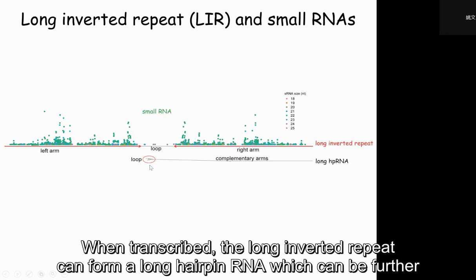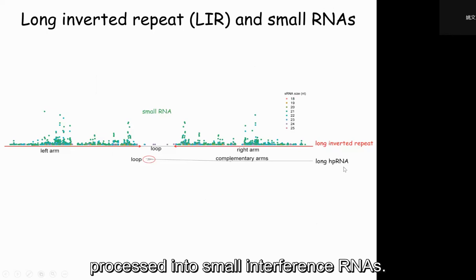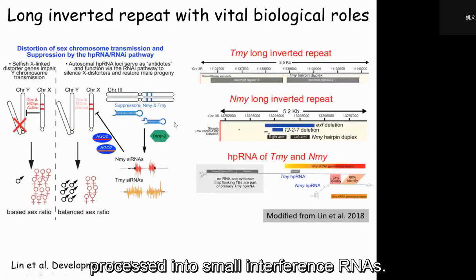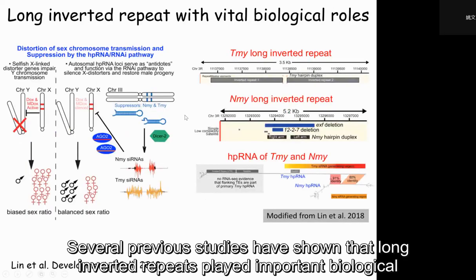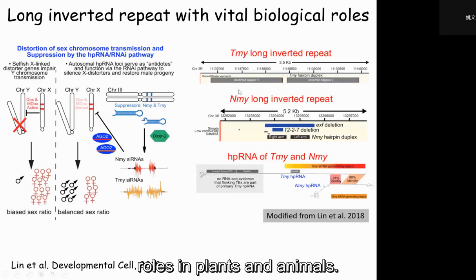When transcribed, the non-invalid repeat can form a hairpin RNA, which can be further processed into small interference RNAs. Several previous studies have shown that non-invalid repeats play important biological roles in plants and animals.